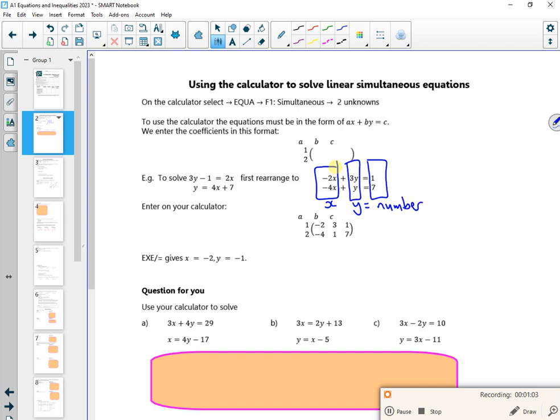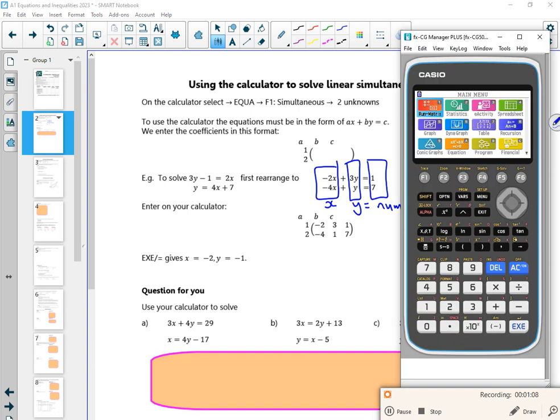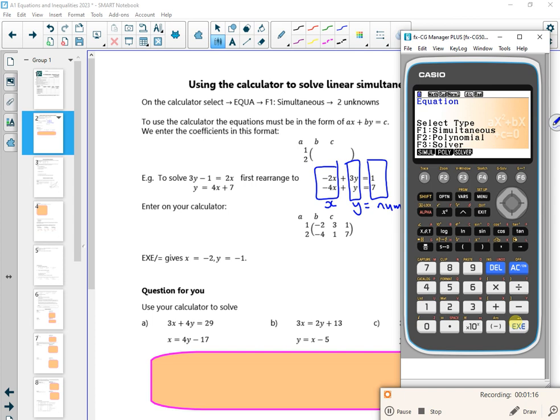If I go onto the calculator, if I do equation, I do F1 for simultaneous. I've got x and y as my unknowns, so it's two unknowns. So all I'm going to do is put the coefficients in. If you look, it says ax plus by equals c. So x's, y's, equals numbers.